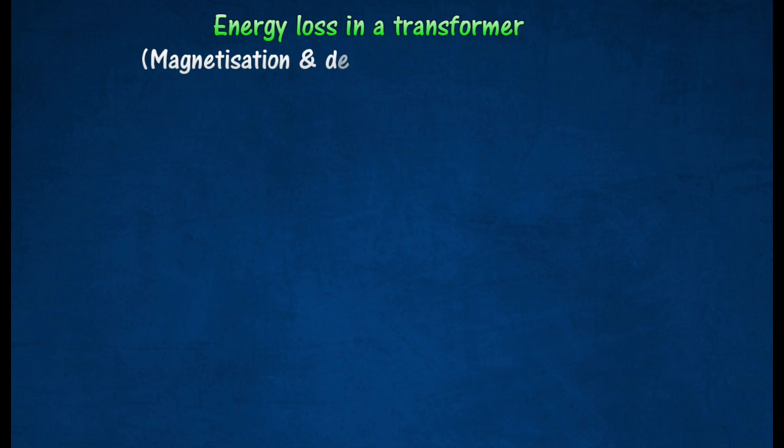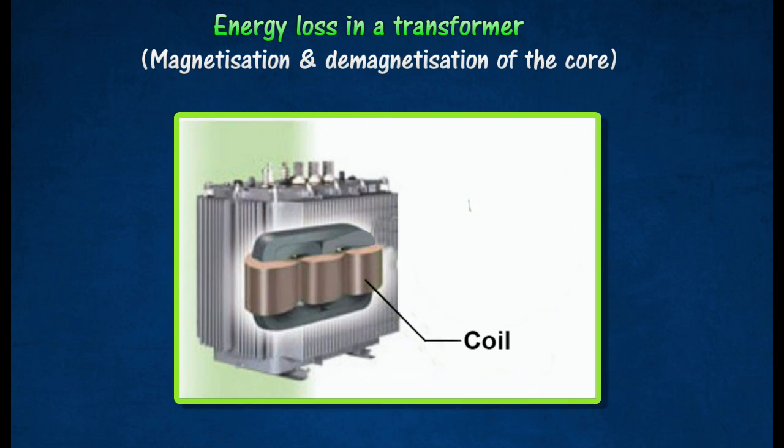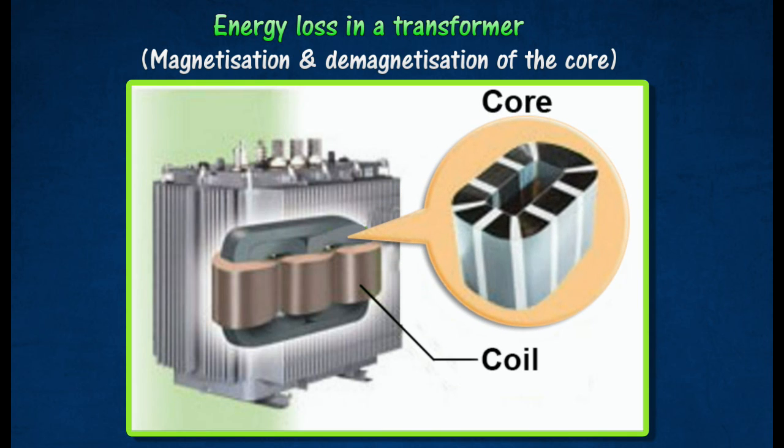Every time the direction of the magnetizing field is changed, some energy is lost due to heating. This is because work has to be done to change the magnitude and the direction of the magnetic field in the core. This energy loss can be reduced by using cores made of soft iron, as soft iron can be easily magnetized and demagnetized.